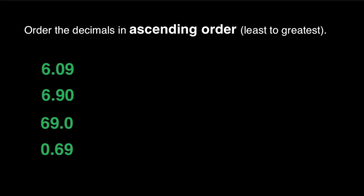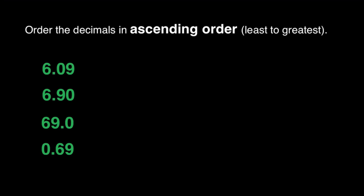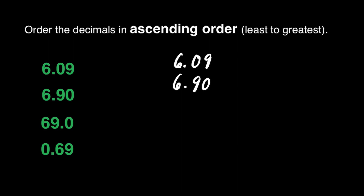We have the next exercise, still in ascending order. We have 6 and 9 hundredths, 6 and 90 hundredths, 69.0, and 0.69 hundredths. Let's rewrite the decimals so that we can align the decimal points to identify which whole number part is the least: 6 and 9 hundredths, 6 and 90 hundredths, 69.0, and 0.69.